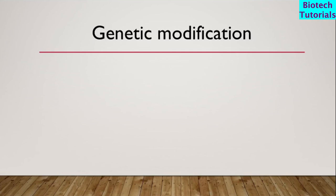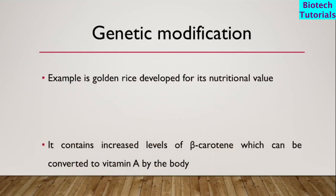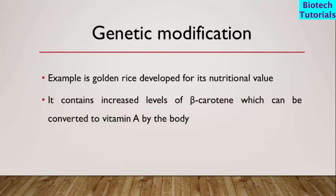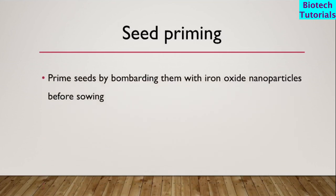Second is genetic modification. The main example of this is golden rice, developed for its nutritional value. It contains increased levels of beta-carotene, which can be converted to vitamin A by the body.